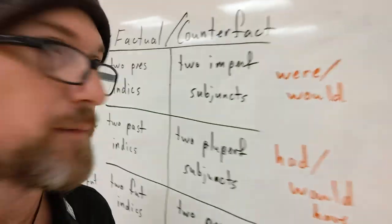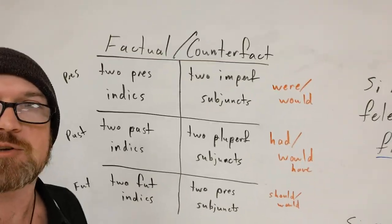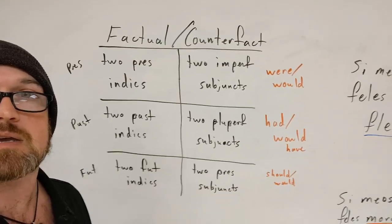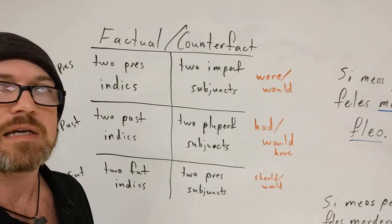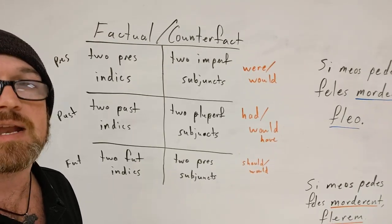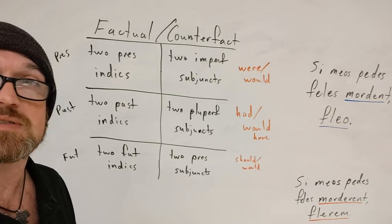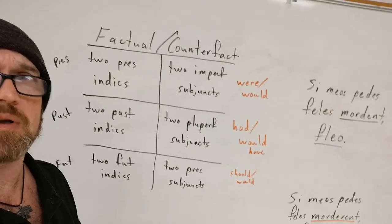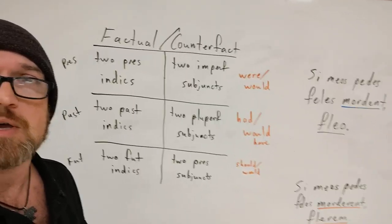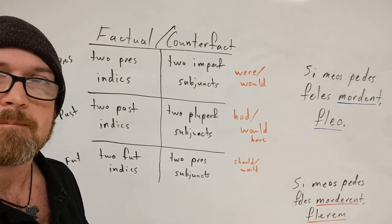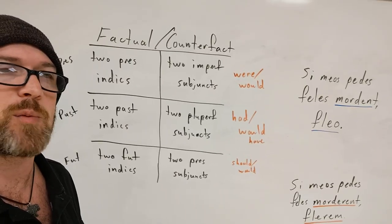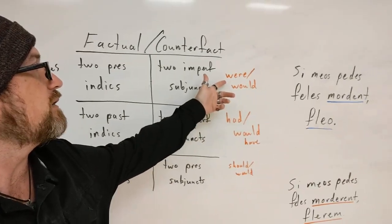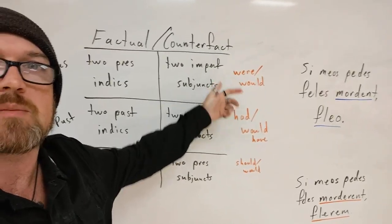Here's a table showing the basic breakdown of how conditions are organized. Just like participles, infinitives, and subordinate clauses in general, these can happen in different tenses. For a present real condition, you're going to have two present indicatives. But counterintuitively, for a present unreal condition, you won't use present subjunctives — you're going to use imperfect subjunctives, like I just did in that example, with 'were' and 'would.'